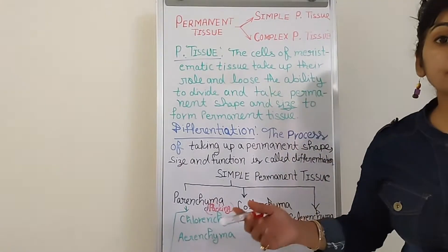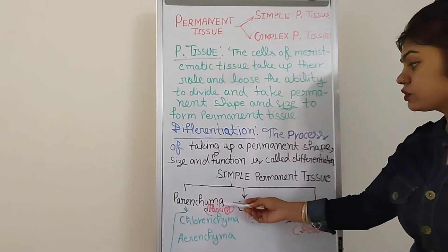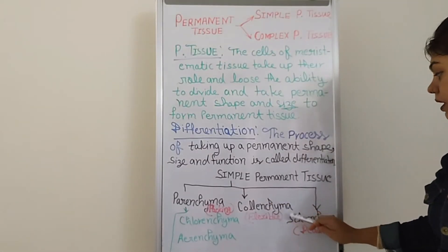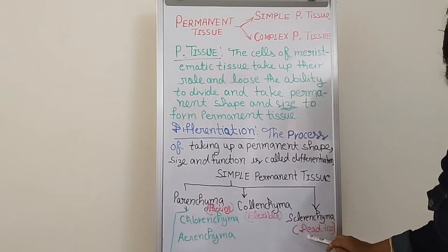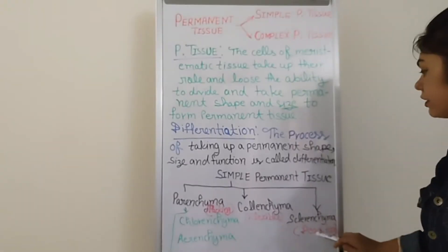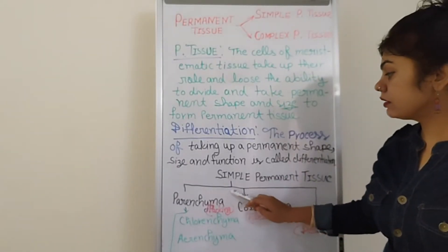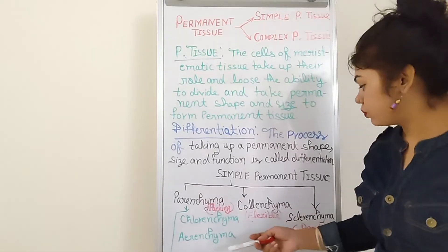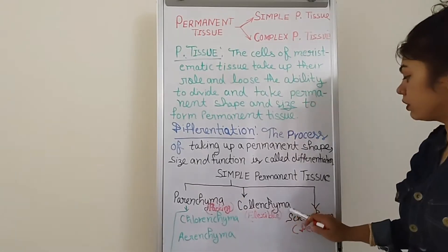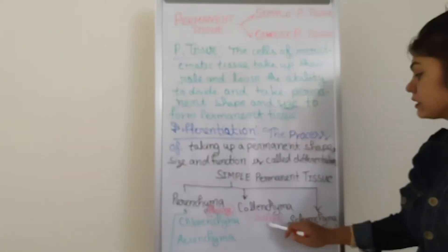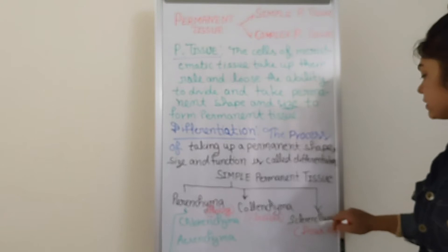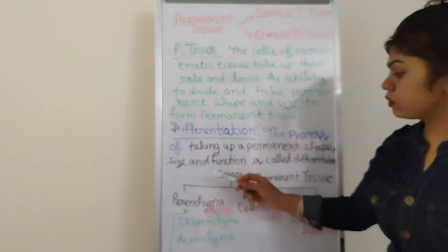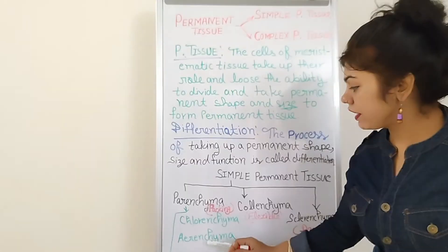There are mainly three types of simple permanent tissue: first, parenchyma; second, colenchyma; and third, sclerenchyma. Parenchyma is commonly known as packing tissue, colenchyma as flexible tissue, and sclerenchyma as dead tissue.